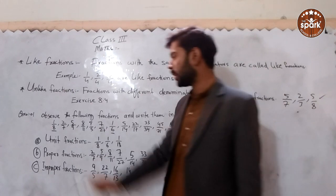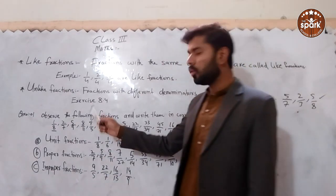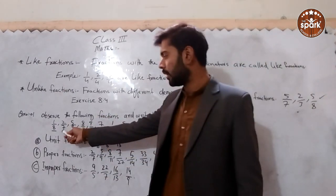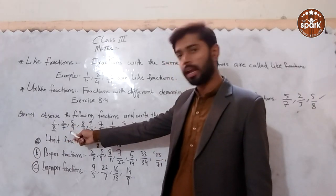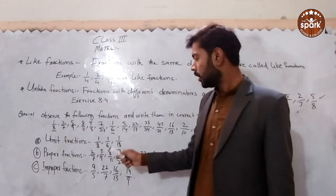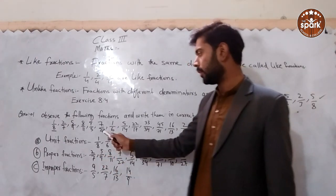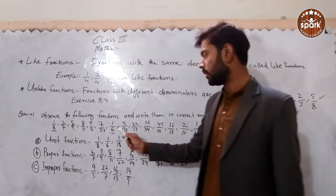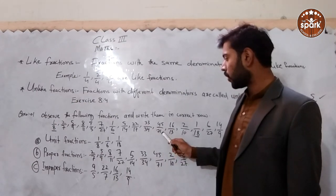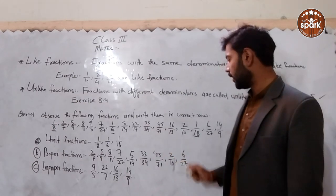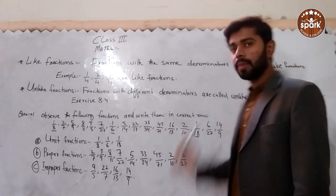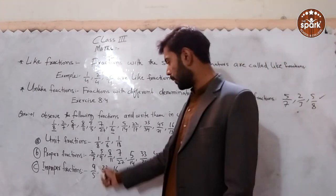For proper fractions, the numerator is less than the denominator. For example, 2 upon 7, 5 upon 9, and 8 upon 9 are proper fractions. Also, 7 upon 27, 5 upon 40, 53 upon 34 — wait — 45 upon 71, 2 upon 10, and 6 upon 27 are all proper fractions.